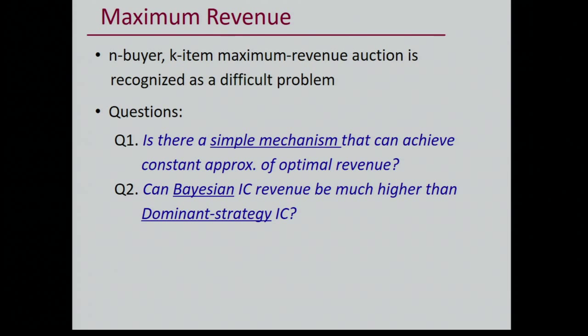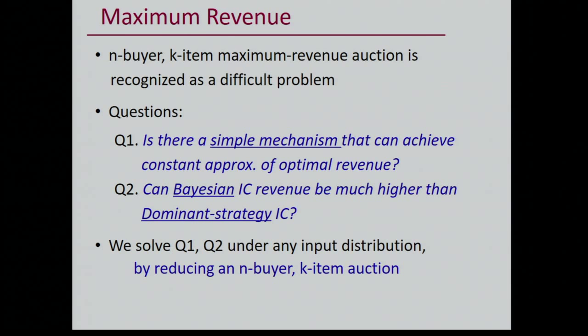In this talk, we are going to address two questions. The first one: is there a simple mechanism that can achieve a constant approximation of optimal revenue? The second question: can the Bayesian incentive compatibility revenue be much higher than the dominant strategy incentive compatibility? We'll give some solutions to these questions under the assumption of independence of the different input distributions, but otherwise they can be arbitrary.